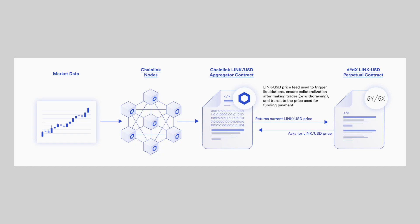So that's where Chainlink comes into play. They want to get rid of bad actors and mistakes from happening when it comes to real world data being transmitted over the blockchain. The main feature of Chainlink are these oracles. Chainlink gathers information from a network of oracles, discards outliers, and then the consensus is passed to the smart contract to ensure validity.